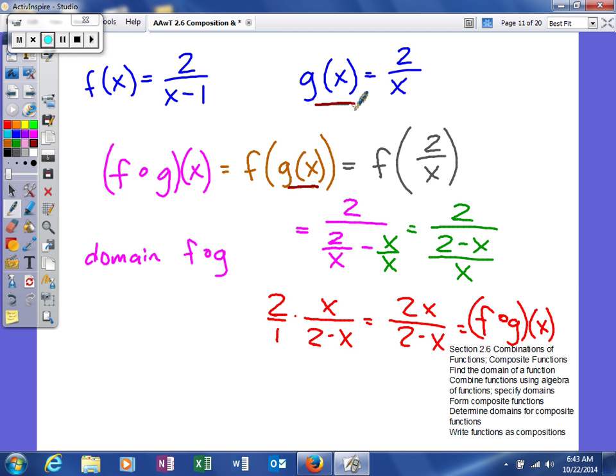If you look at g of x, if we plug in 0 for x, that's going to limit our domain. So one value we can't use, x cannot be equal to 0, because when plugged in, it will make us divide by 0. And you can see that in our composite function right there.